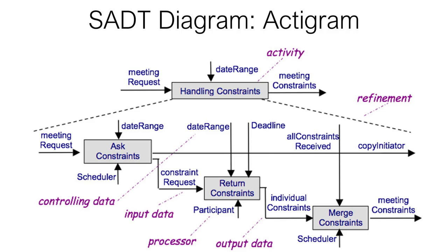For example, here we have a 'handling constraints' activity. This is then decomposed into three sub-activities. On the west side, we have our input data. On the east, we have our output data. To the north, we have data or events that control the activity. And on the south, we show the system components that process that data.